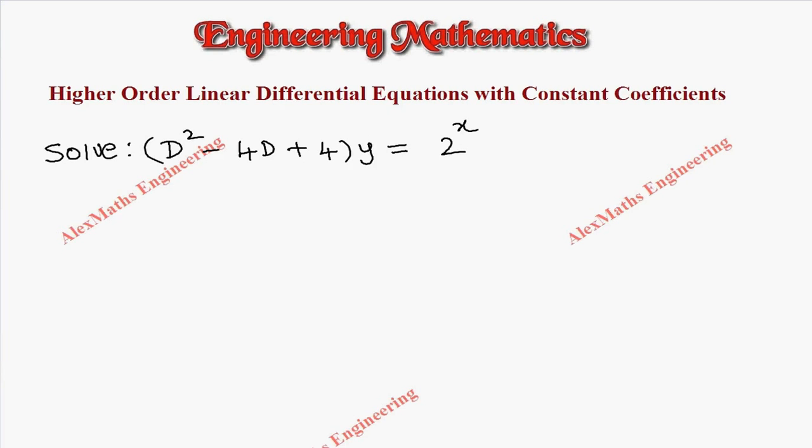Hi students, this is Alex. In this problem, they have given: solve (D² - 4D + 4)y = 2^x. First, we have to rearrange this term and write it in exponential form.